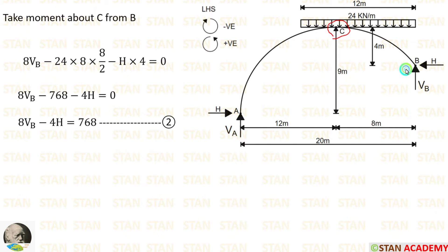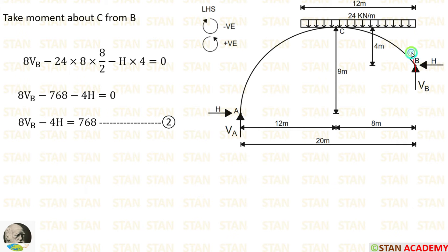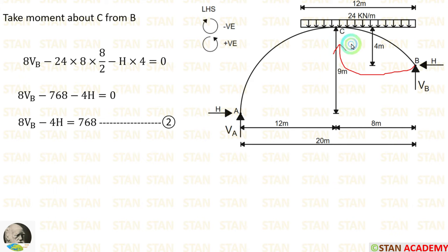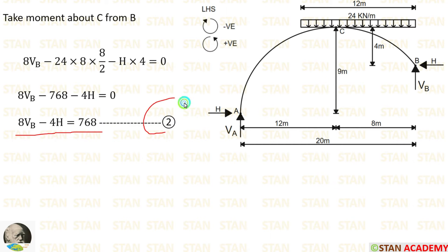Now, let us take moment about C from point B. In this case, we are moving towards the left-hand side — clockwise will be negative, anticlockwise will be positive. The vertical reaction VB is acting towards point C in the anticlockwise direction, so it will be positive and the distance is 8 meter: 8VB. The UDL of 24 kN/m is acting in the clockwise direction, so it will be negative: minus 24 × 8 × 8/2. The horizontal thrust is acting in the clockwise direction, so it will be negative, and the height is 4 meter: minus H × 4. Finally, we are getting one equation — let us keep this as equation number 2.